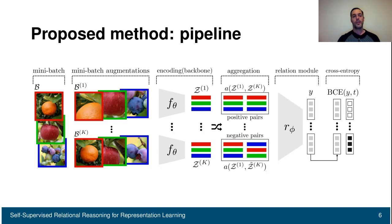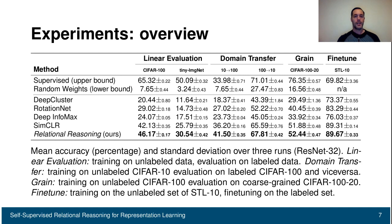Here we see the full pipeline. On the left we have the mini-batch B, and we apply K augmentations on this mini-batch. Then we encode each image using the backbone f, producing the latent representation z. We then use the aggregation function to generate positive and negative pairs. The relation head takes these pairs as input and produces a prediction y. We then plug y and the target t into the binary cross-entropy loss, which is minimized with respect to the parameters of the relation head and the backbone.